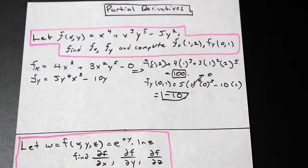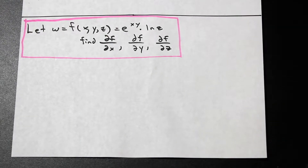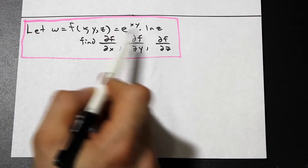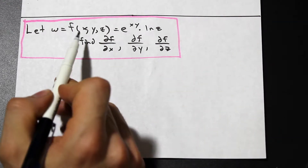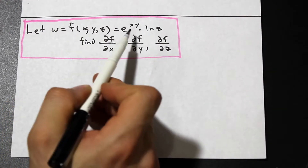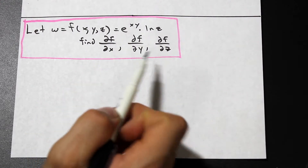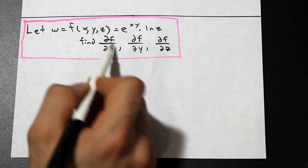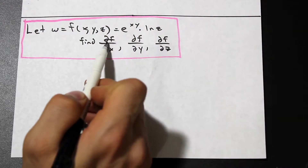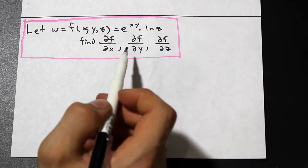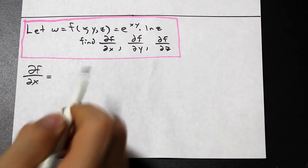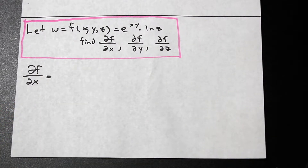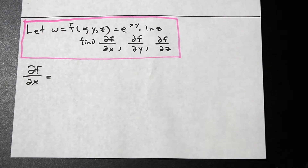Let's move on to the next question. This one might seem trickier but it's really simple too — it's a great introduction to partial derivatives. We have a three-variable function of x, y, and z: f equals e to the power of (xy) times ln(z). We're asked to find the partial derivatives. This also introduces the alternate notation df/dx, or partial f over partial x. Let's start with df/dx, considering x as the variable and y and z as constants.